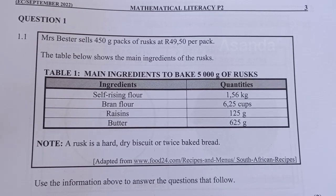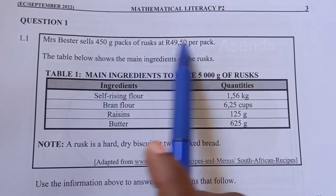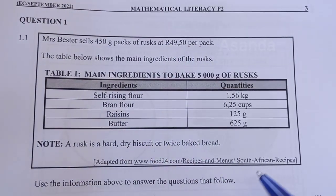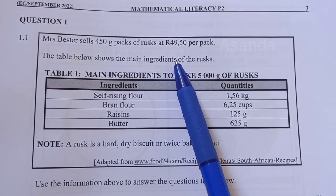Mrs. Bester sells 450 gram packs of rusks at R49.50 per pack. That information is going to be very important, how much each pack costs. The table below shows the main ingredients of the rusks.